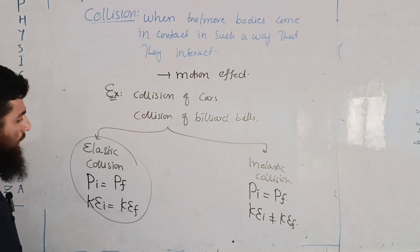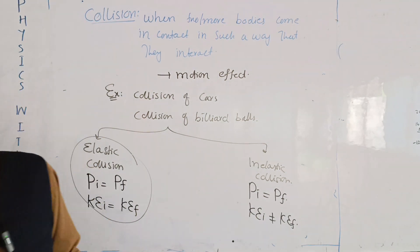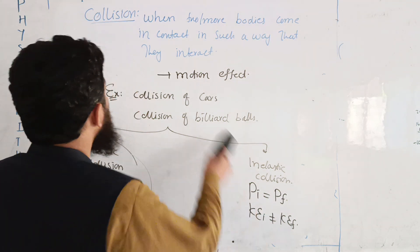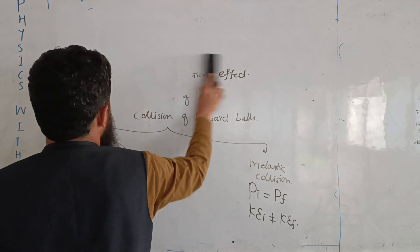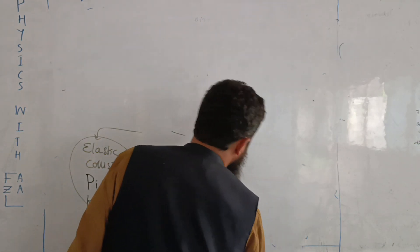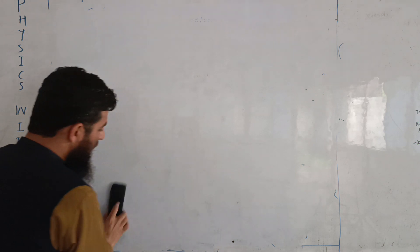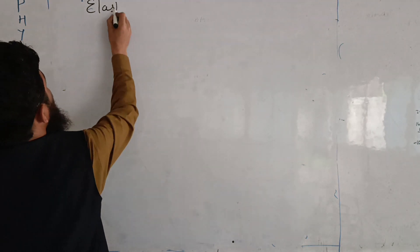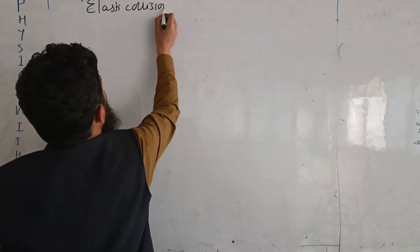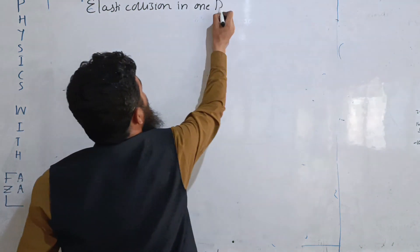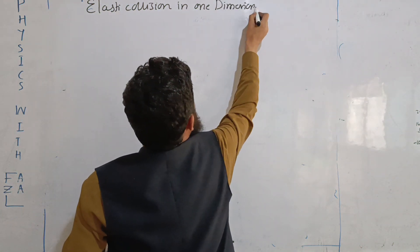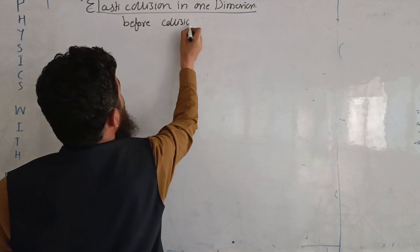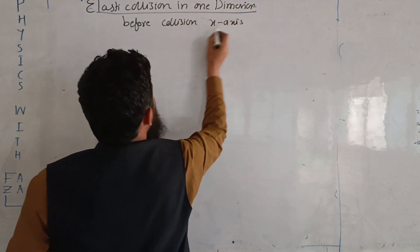Now about elastic collision in one dimension. Motion can be one-dimensional, two-dimensional, or three-dimensional. We are discussing elastic collision in one dimension. Before collision, suppose the bodies are moving along the x-axis.